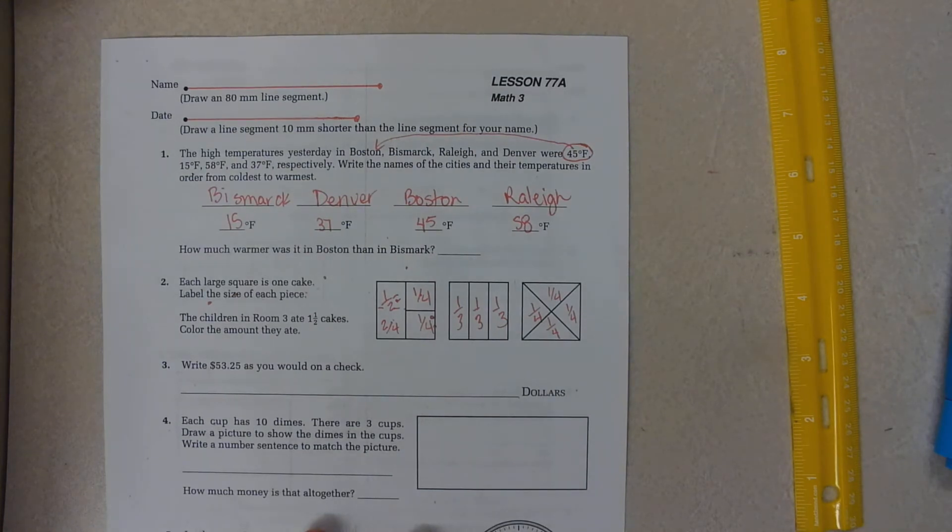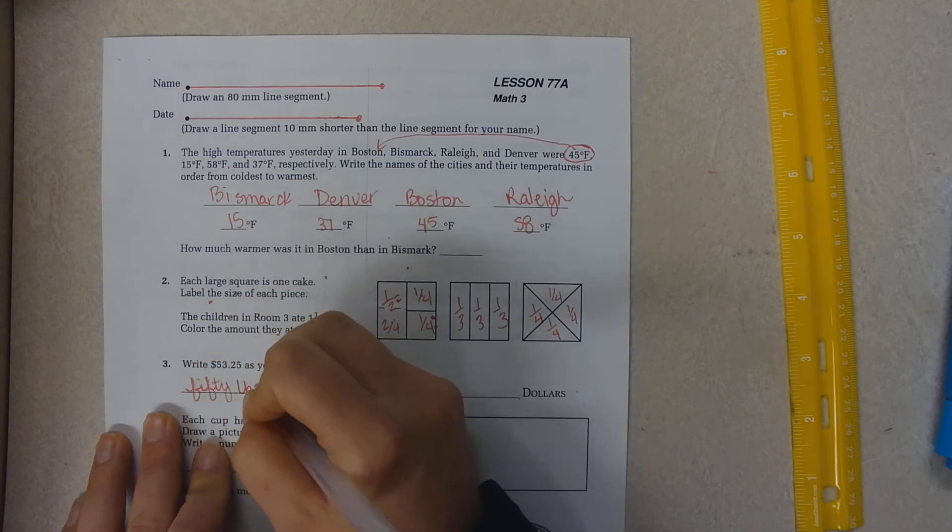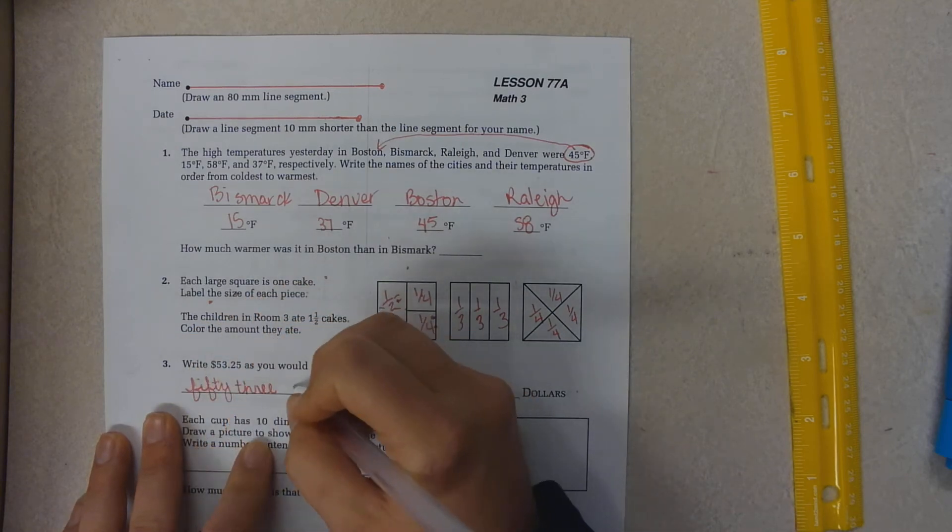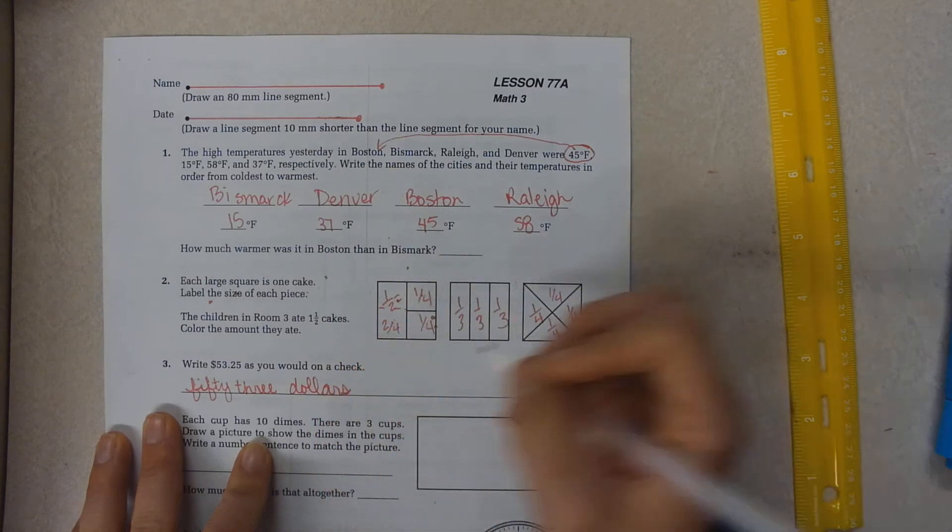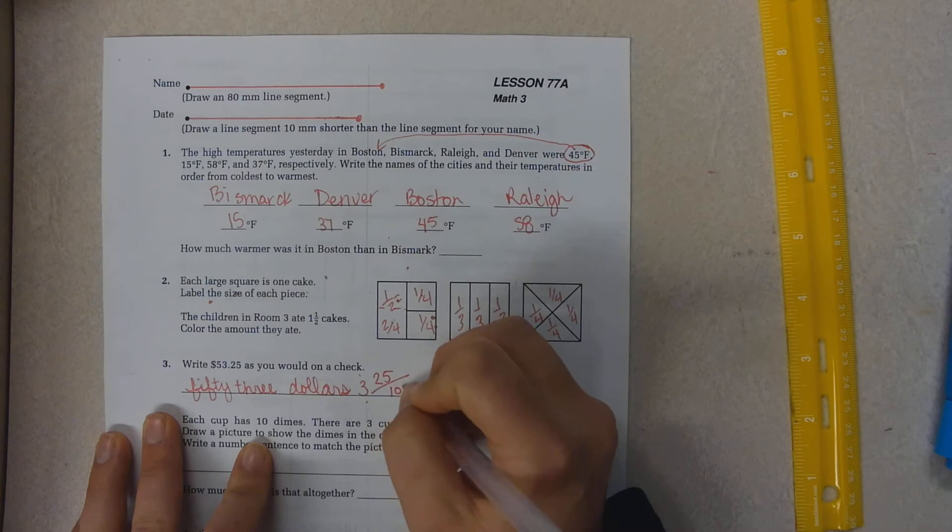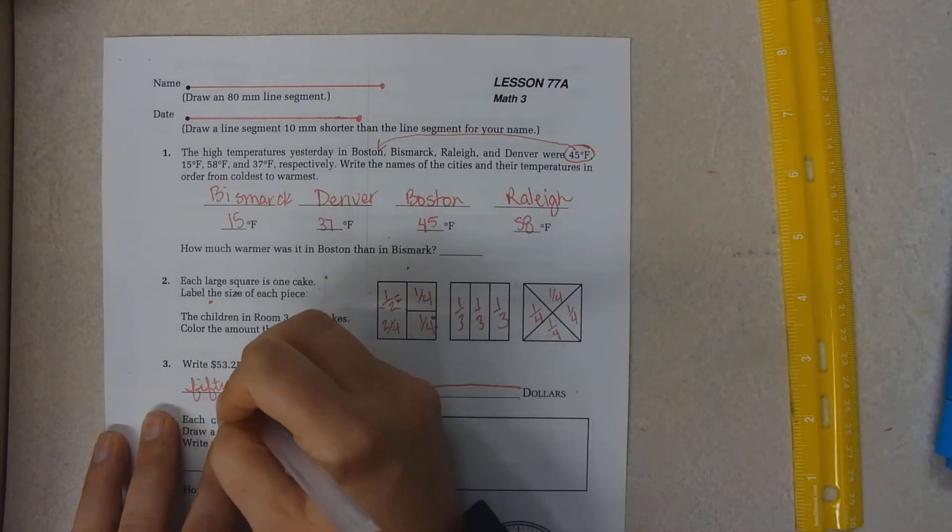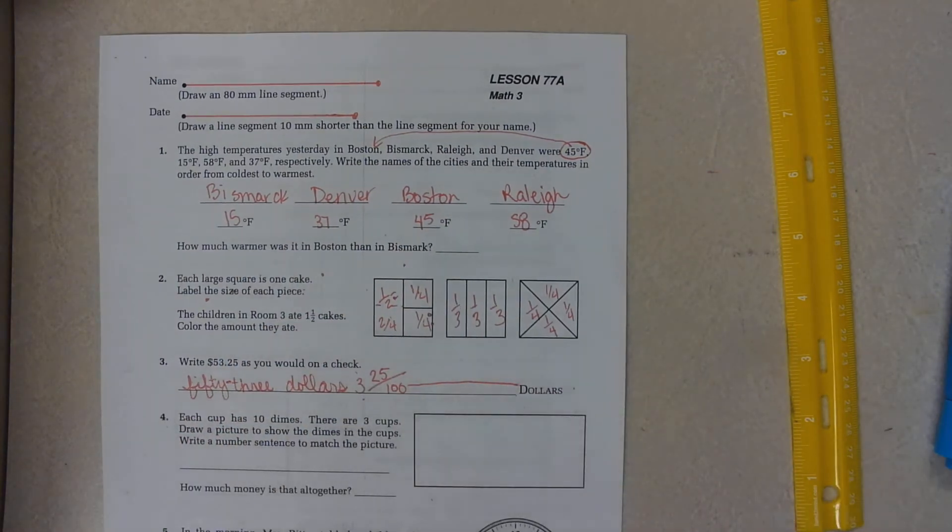Write $53.25 as you would write it on a check. So you would write $53 and $25 over 100. And you always draw a line out. And we're missing one thing. You always put a hyphen between the tens and the ones place.